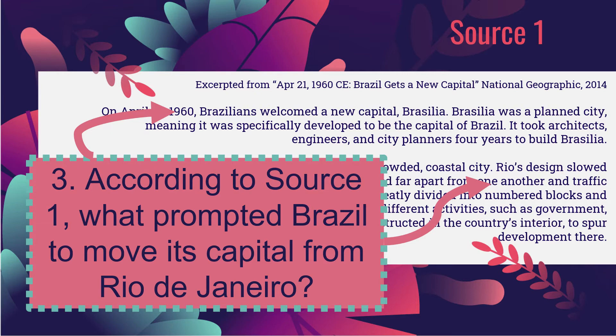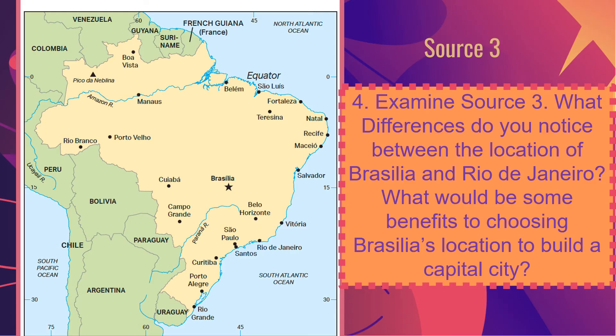Question three on your paper asks: according to source one, what prompted Brazil to move its capital from Rio de Janeiro? Go ahead, pause the video and answer question three. Question four asks you to examine source three: what differences do you notice between the location of Brasilia and Rio de Janeiro, and what would be some benefits to choosing Brasilia's location to build a capital city?